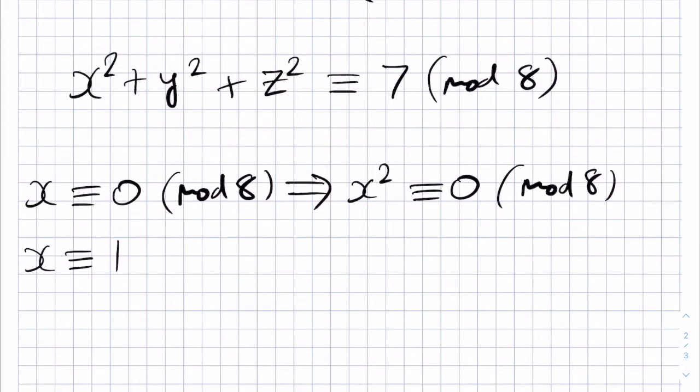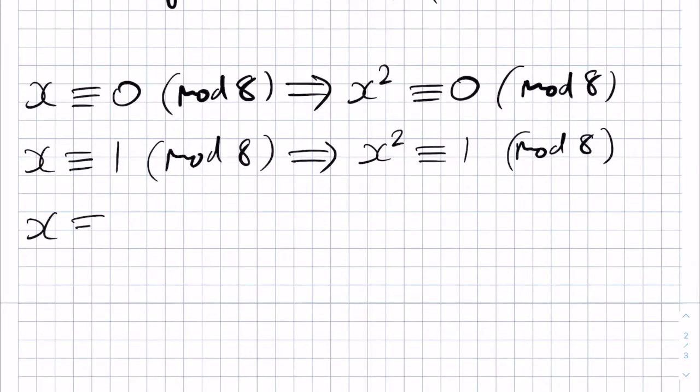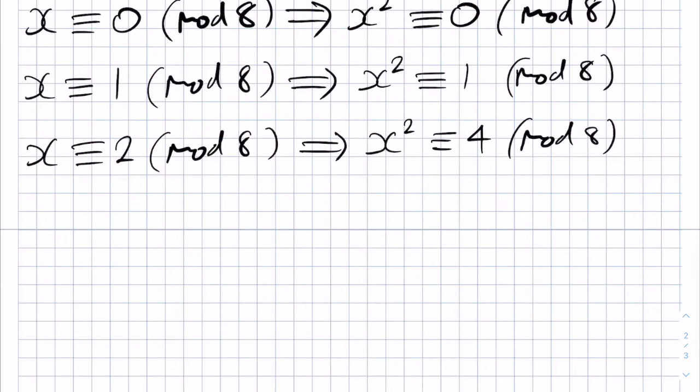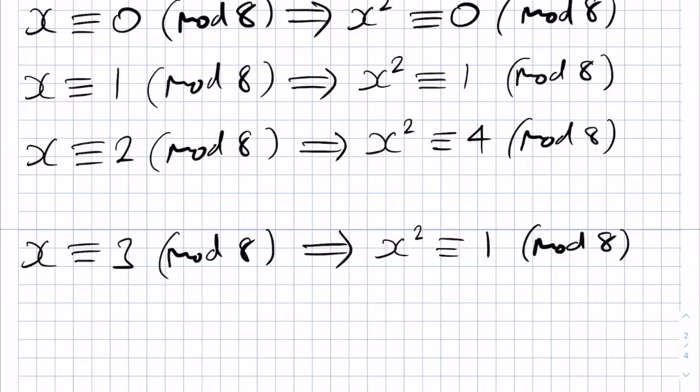If x is congruent to 1 modulo 8, then we have x squared also being congruent to 1 modulo 8. Let's say we have 2, then this would give 4 when we square. Let's say we have 3. Well, here's where the number isn't quite as clear because of the modulo. We actually get 1 because, of course, we have 9 after squaring and then we reduce modulo 8 to get 1.